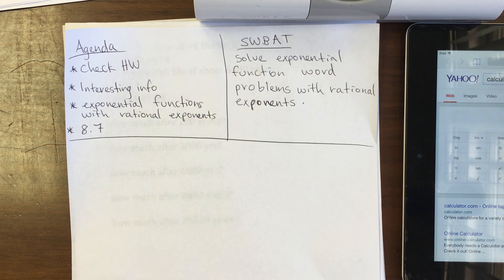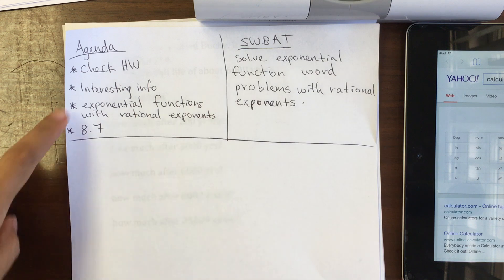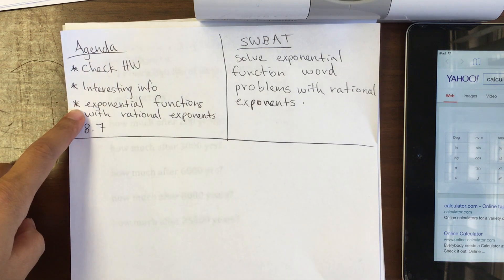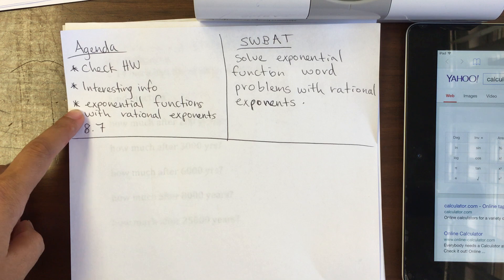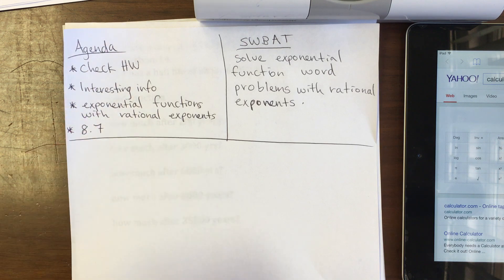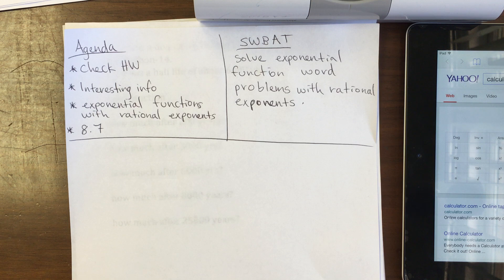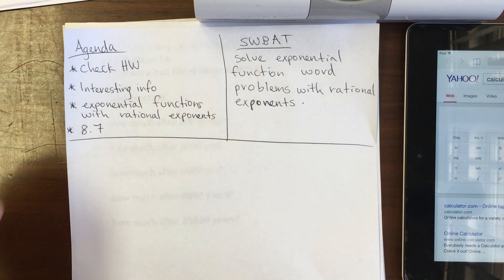Hello students. Today's agenda is to check homework, share some interesting information, and learn exponential functions with rational exponents, after which you will be able to do assignment 8.7. Today students will be able to solve exponential function word problems with rational exponents.